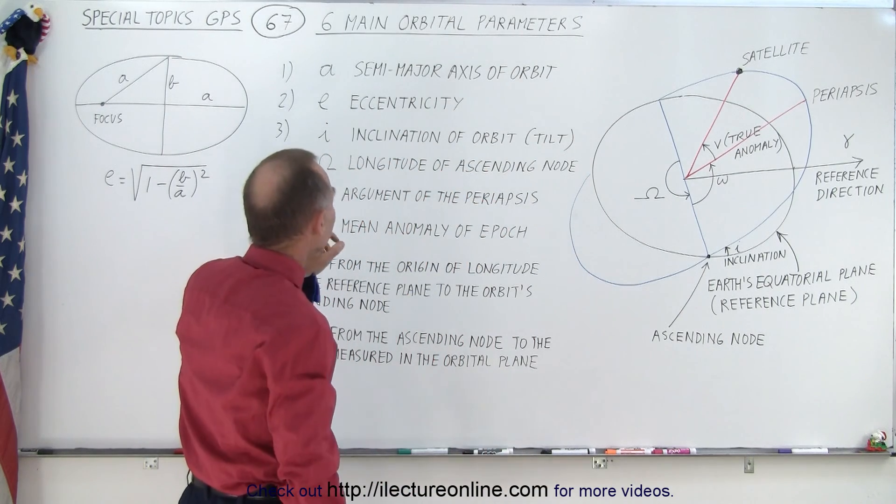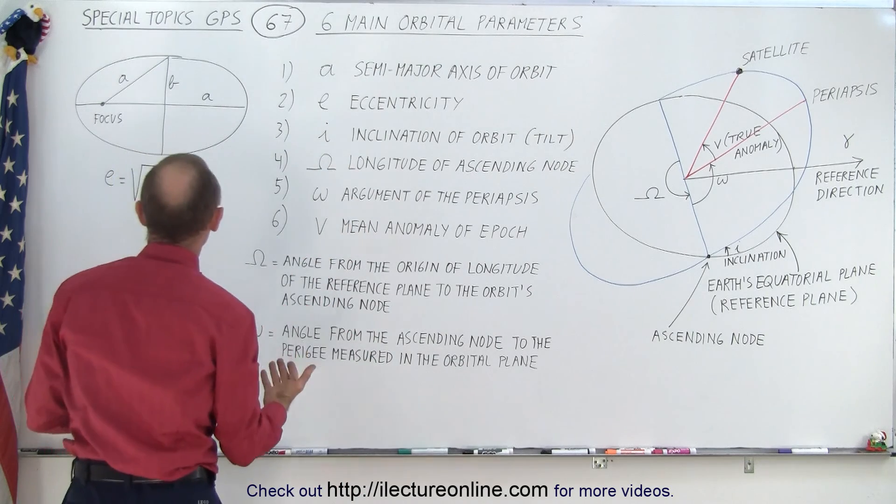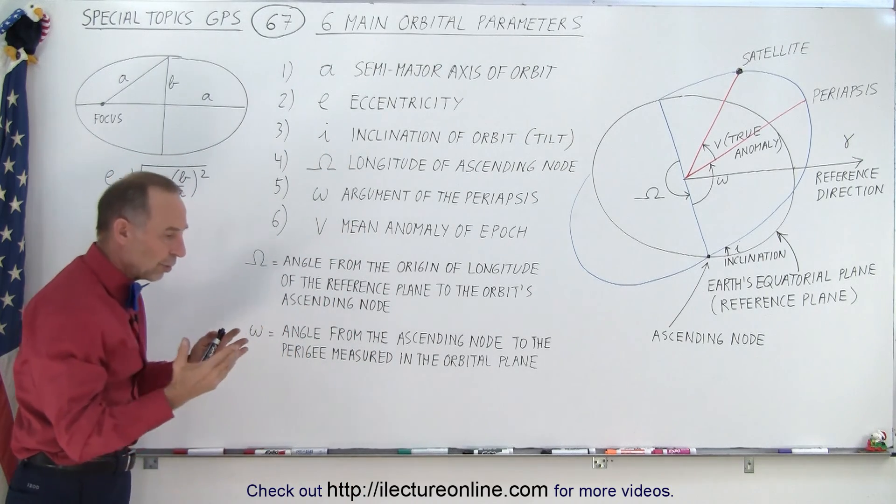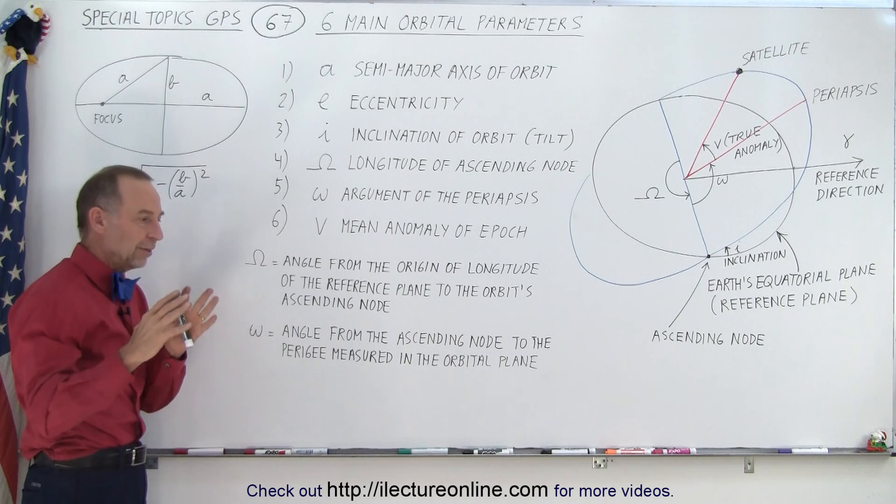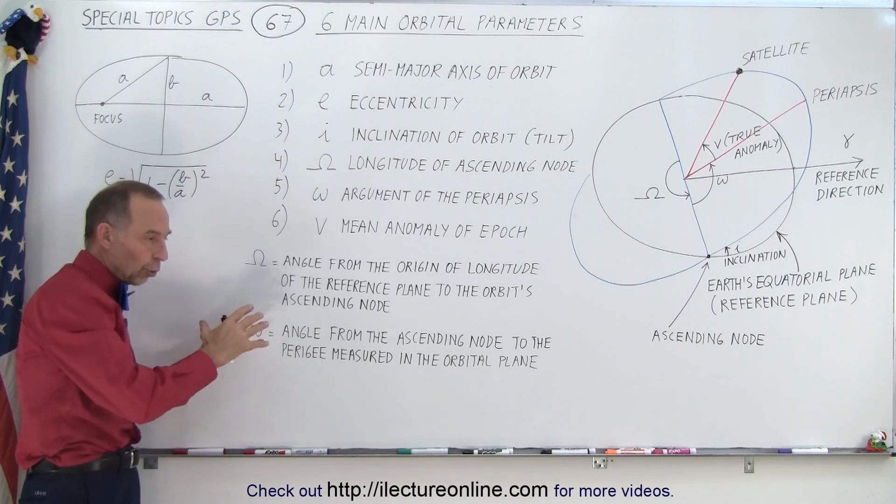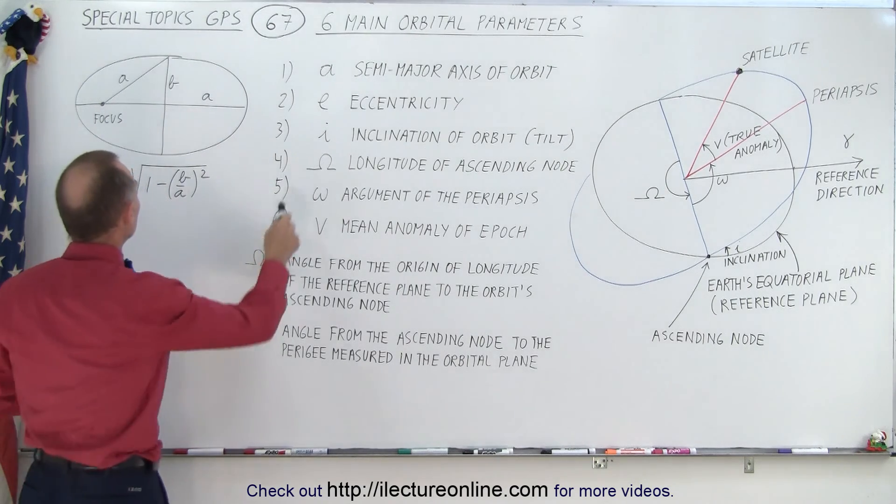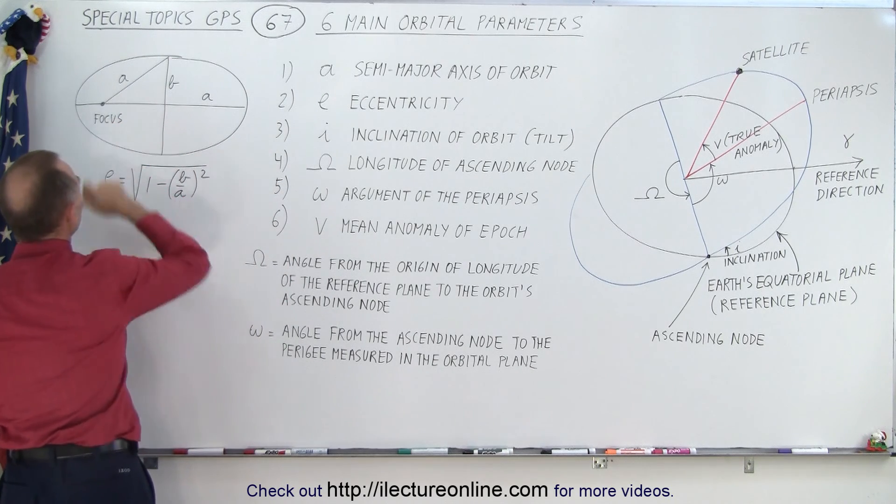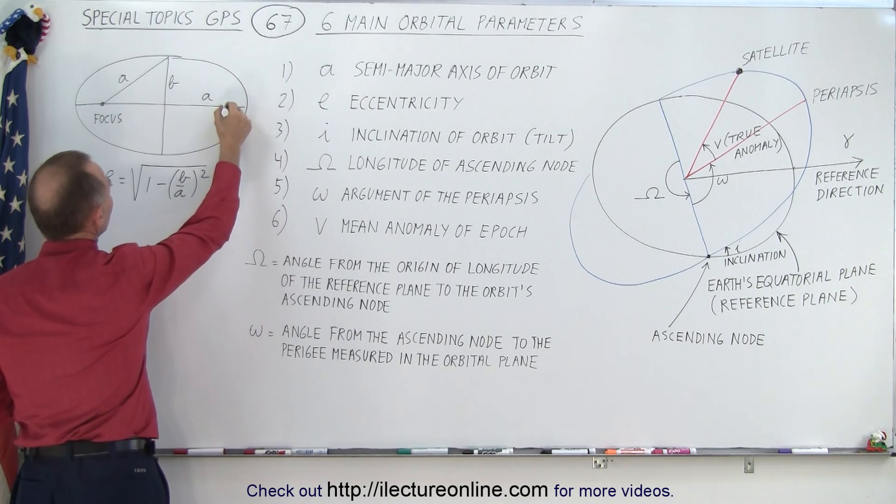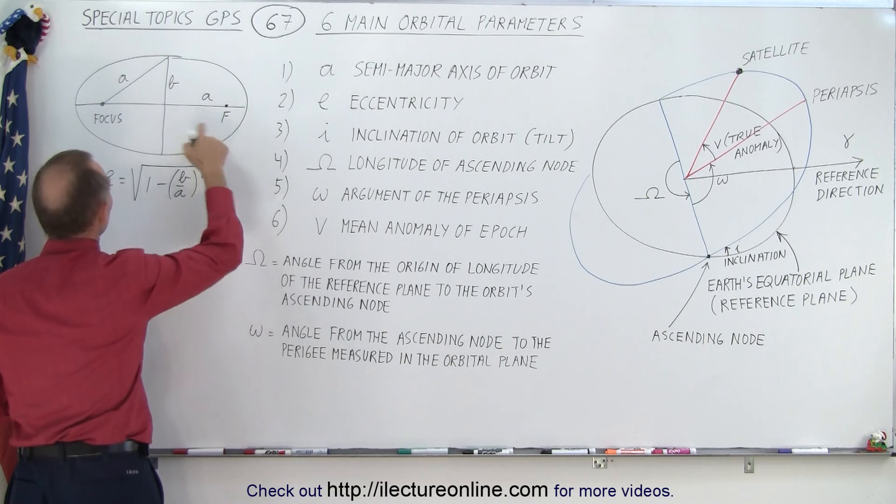The second one is what we call the eccentricity. Now the eccentricity is a measure of whether or not the orbit is near circular or more in the sense of the elliptical orbit. So here you can see is an ellipse, here's the focus on one side, you'd have the focus on the other side, that's another focus right there.